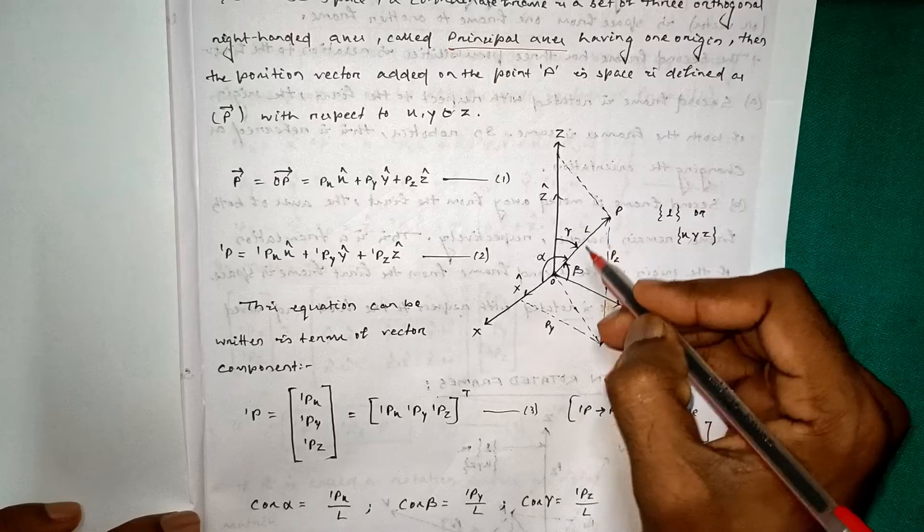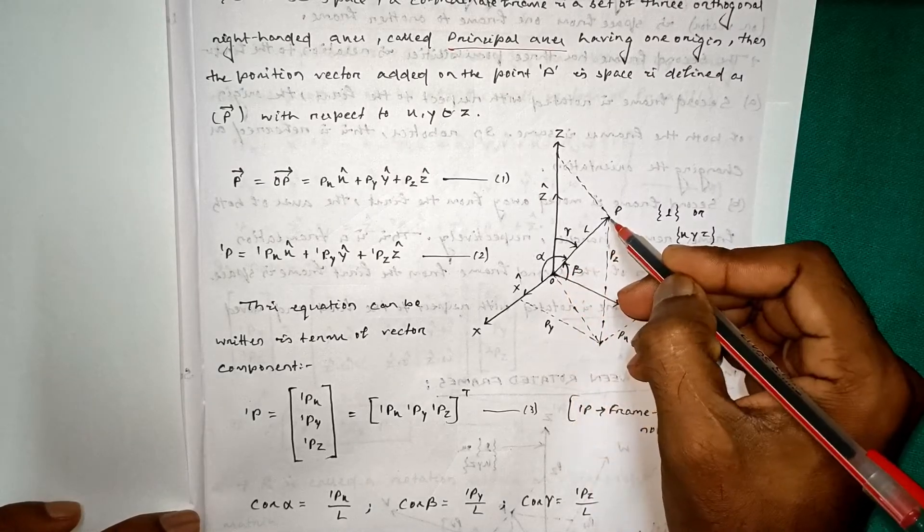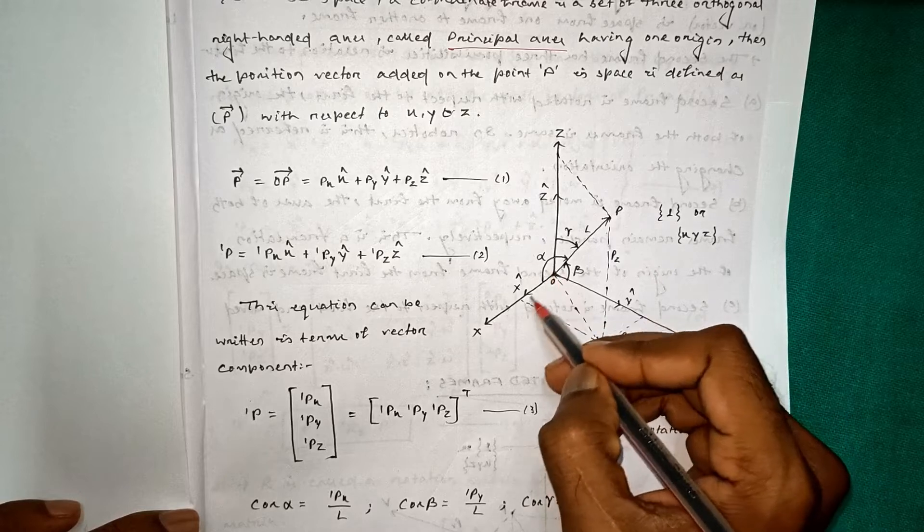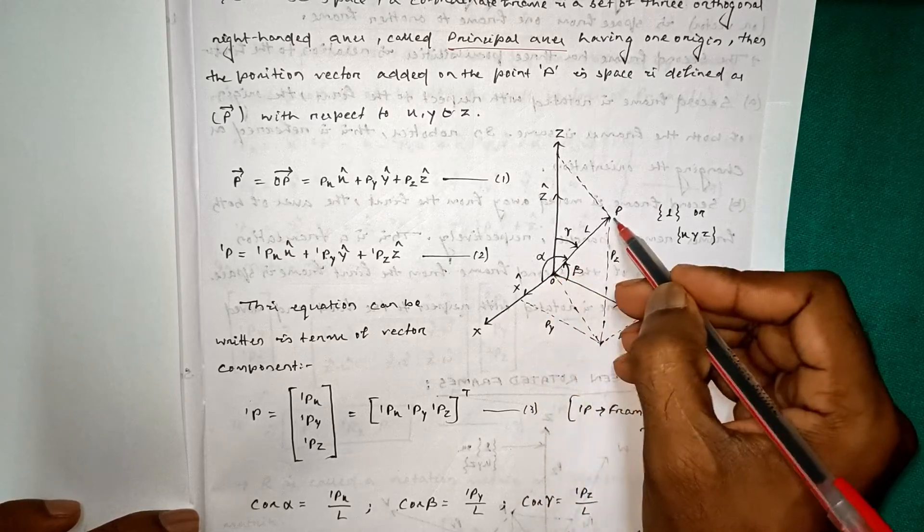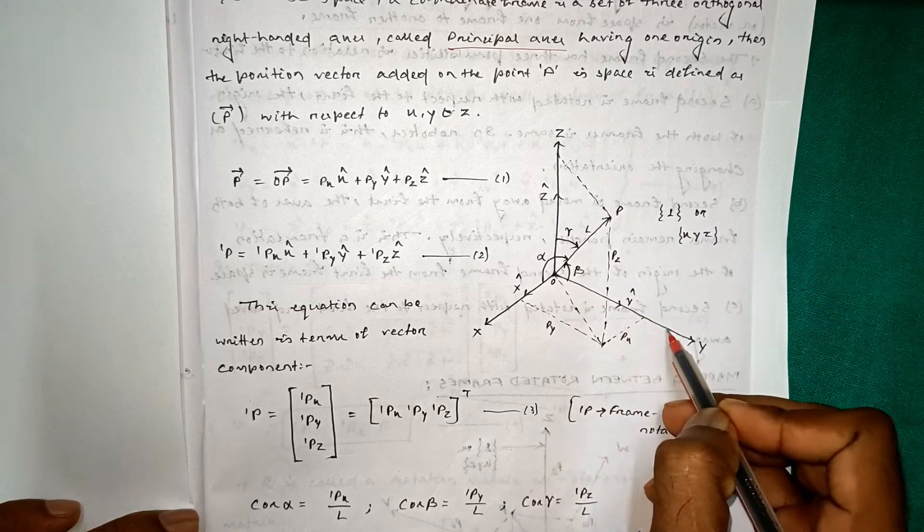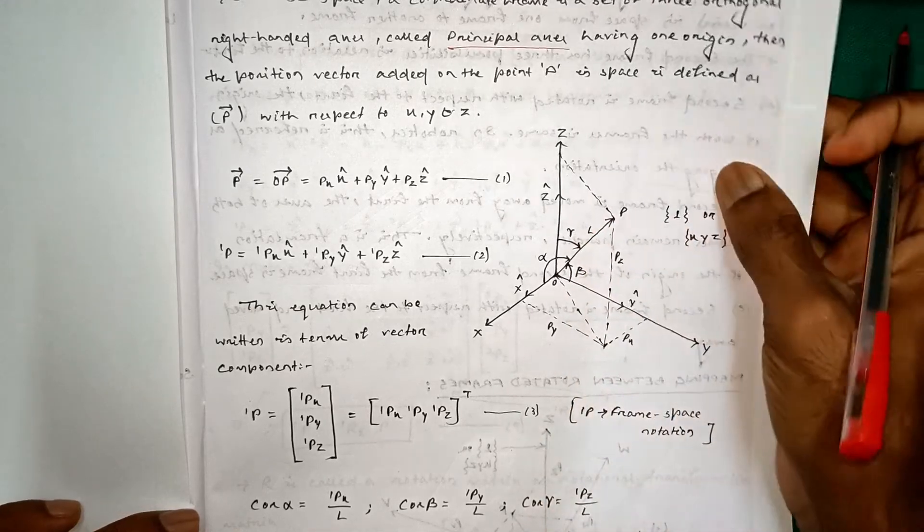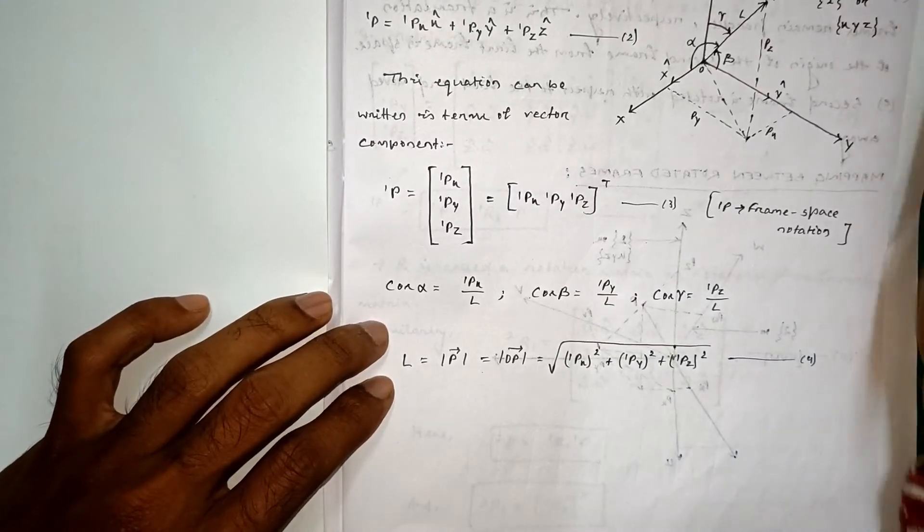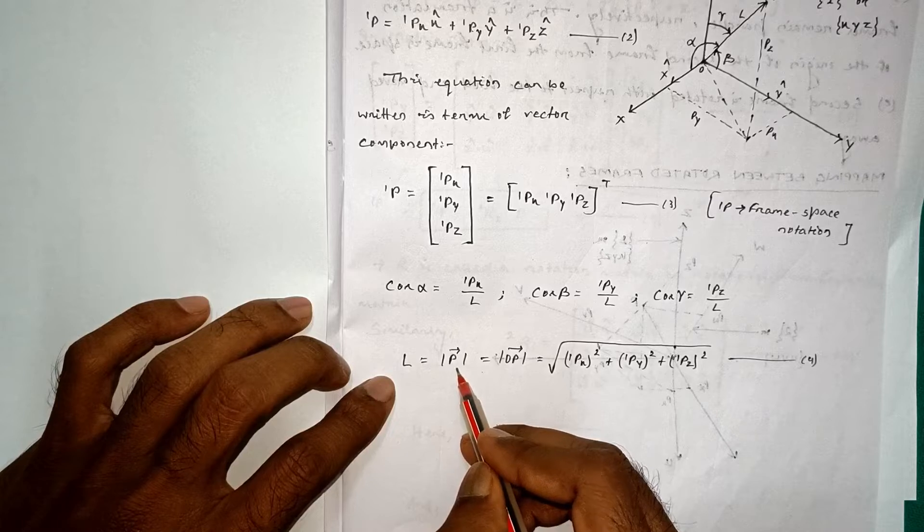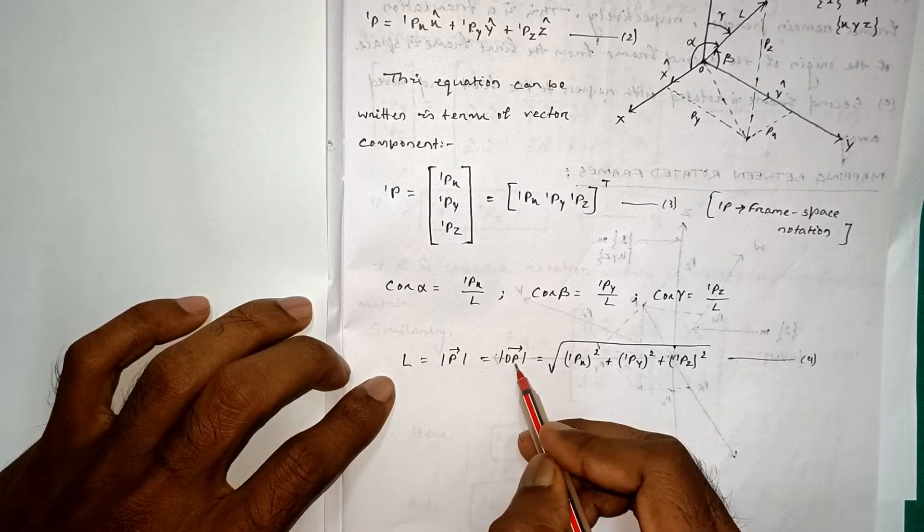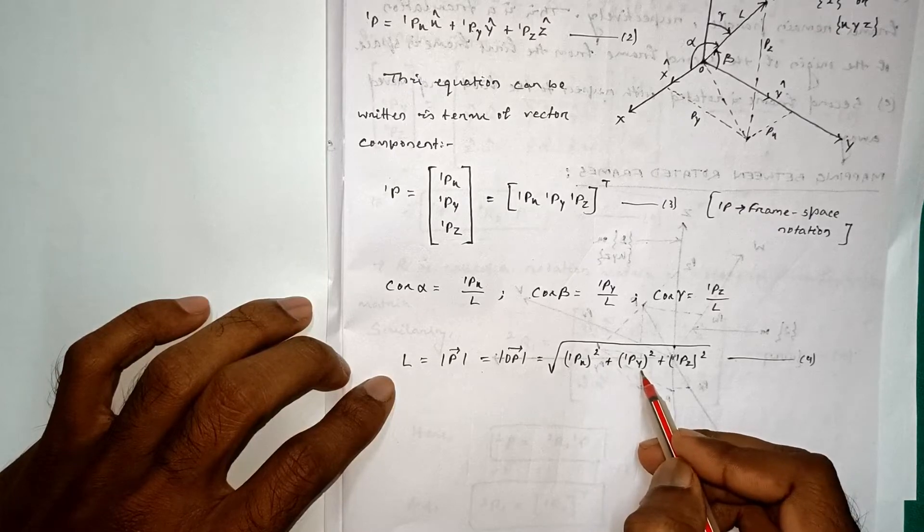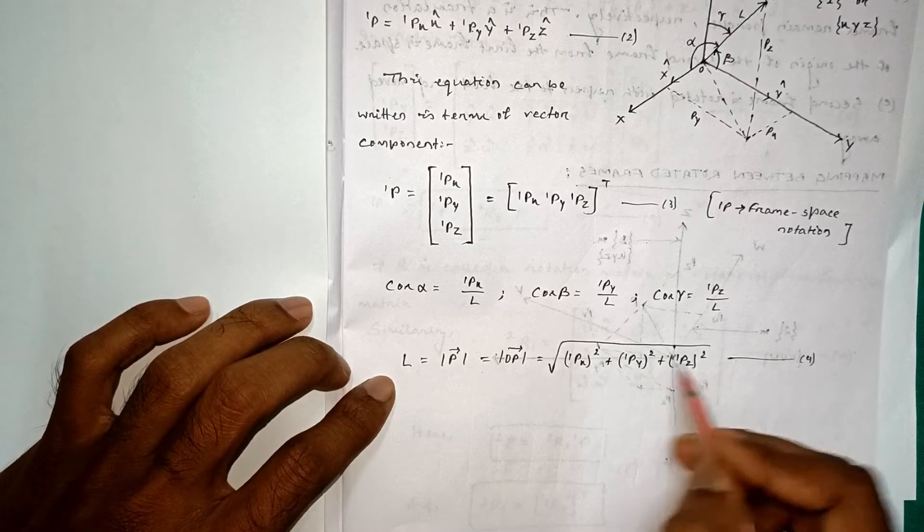So L is the distance from the origin O to P and the angles are alpha from X axis to this line OP, beta from Y axis and gamma from Z axis. So we can also calculate L, that is length L is equal to P vector of mod, that is mod of OP vector, that is equal to square root of 1PX square plus 1PY square plus 1PZ square.